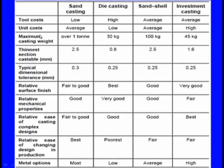For sand casting: unit cost is average, maximum casting weight is over 1 ton — nowadays up to 5 tons. The thinnest section possible is 2.5 mm; below that is not possible with sand casting. Typical dimensional tolerance is 0.3 mm. Relative surface finish is fair to good, relative mechanical properties are good, relative ease of casting complex designs is fair to good, and relative ease of changing design in production is the best. Most metals can be cast.